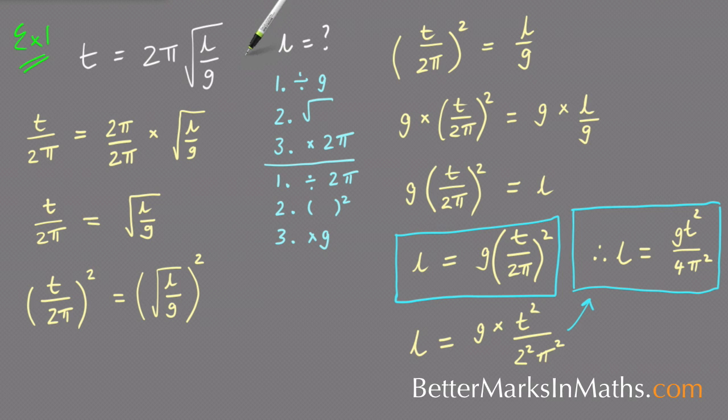And you're being asked to make l the subject. So you've got to get rid of all the stuff around it: the 2π, the square root, and the g.